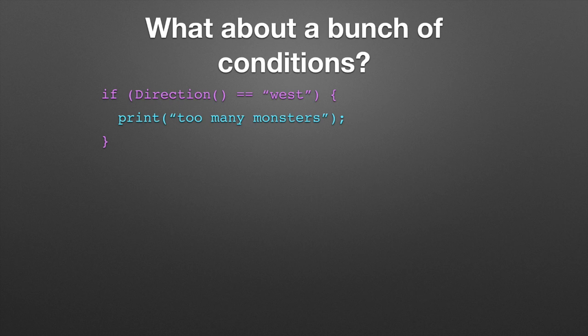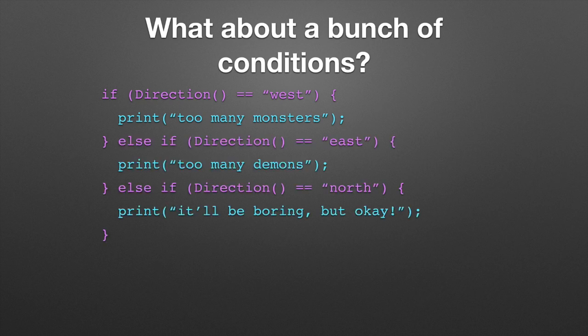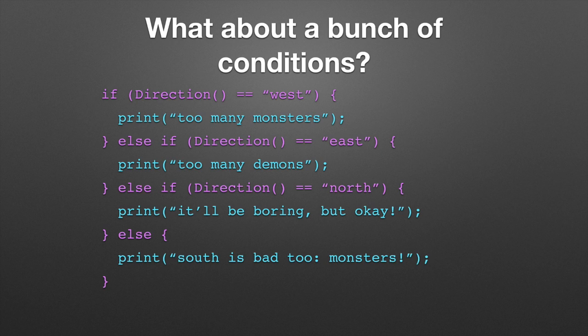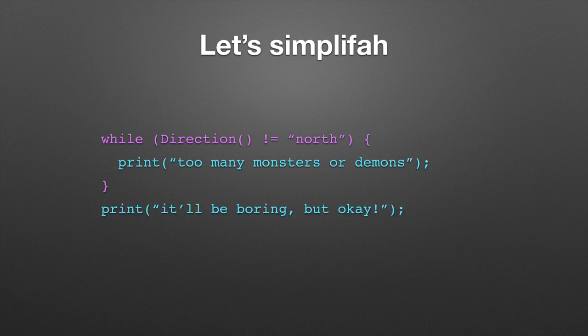You don't just have to choose between two things for a conditional — you could choose among many things. Here we see if you go west, there's too many monsters. If you go east, there's demons. It looks like the only safe direction is north. Here's a good programmer — a lazy programmer. He got away with typing less. Finally, when the person types north, then they get out of there and they get told it'll be boring, but it's okay.